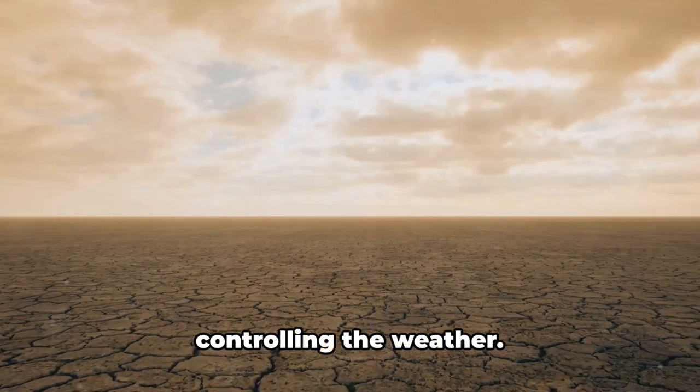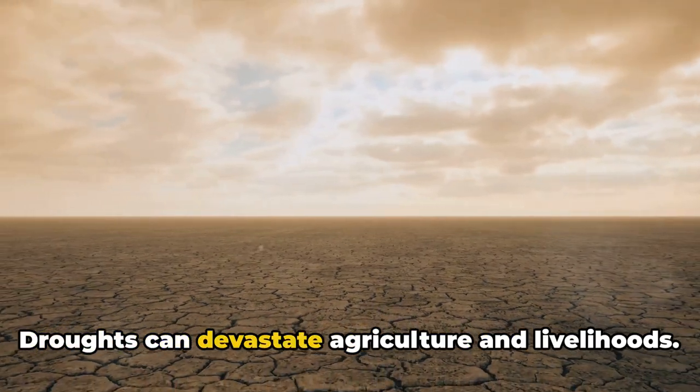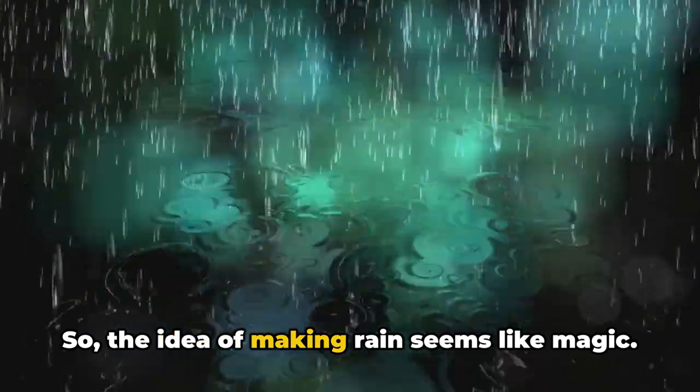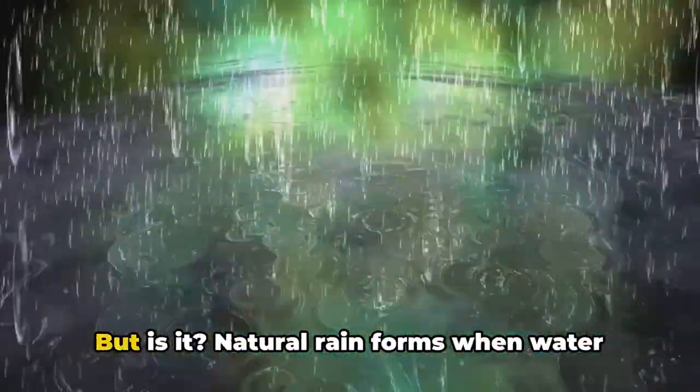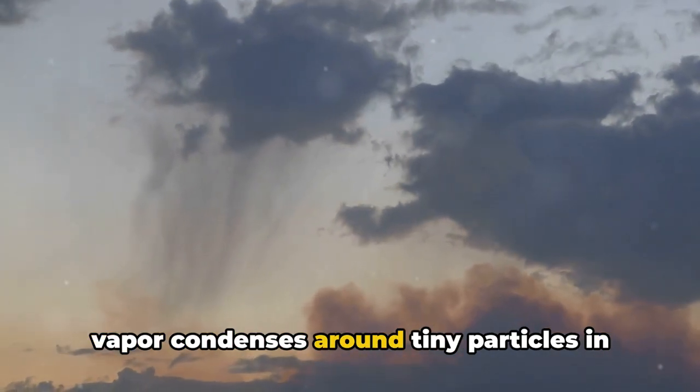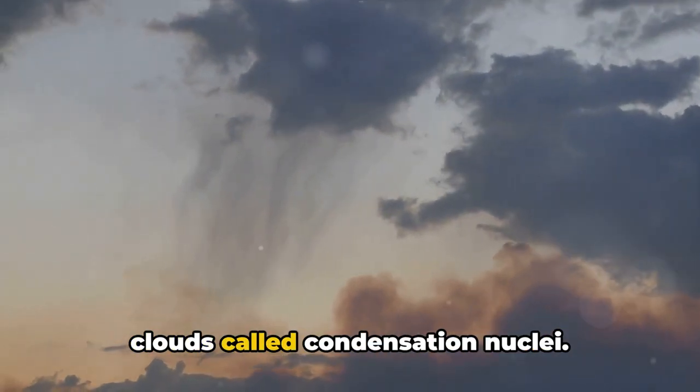For centuries humans have dreamt of controlling the weather. Droughts can devastate agriculture and livelihoods, so the idea of making rain seems like magic. But is it? Natural rain forms when water vapor condenses around tiny particles in clouds called condensation nuclei. These can be dust, salt, or even pollution.